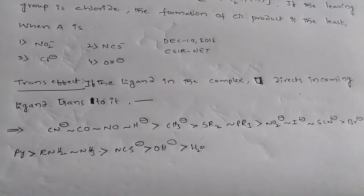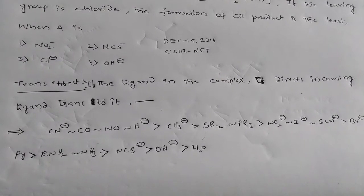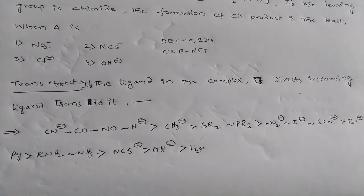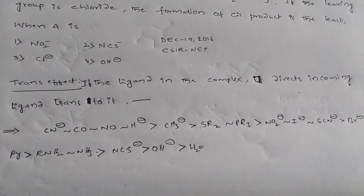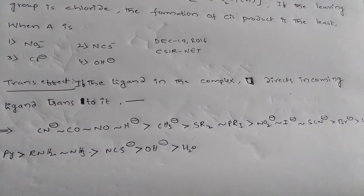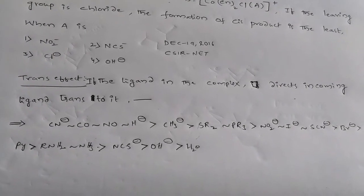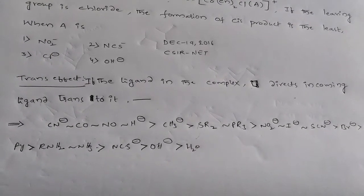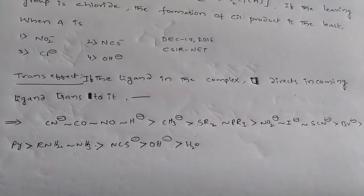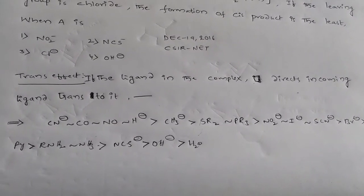The trans-effect series is like below: CN- approximately equals CO and NO and H-, greater than CS3-, greater than SR2- approximately equals trialkylphosphine, greater than NO2- approximately equals I- approximately equals SCN-, greater than Br- and Cl-, greater than Pyridine, greater than OH- and greater than H2O. This is the trans-effect series.